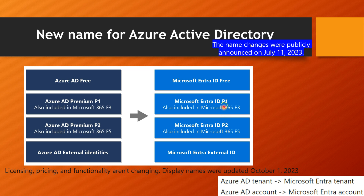The plans built into E3 and E5 remain the same — there is no change to those plans or pricing. Azure AD External Identities is now called Microsoft Entra External ID. This name change was announced on July 11th, 2023, and Microsoft began incorporating it starting from October 1st, 2023.